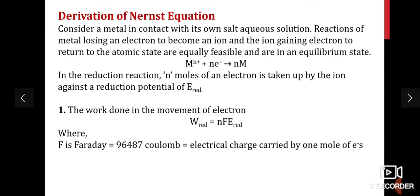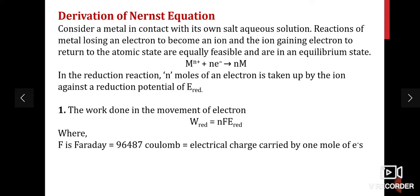For the derivation, consider any metal in contact with a solution of its own salt. The reaction of a metal losing an electron to become an ion, and the ion gaining an electron to return to the atomic state, are equally feasible and in equilibrium. The reaction is M^(n+) + ne⁻ → M. When n moles of electrons are taken up by the ion, the work done in the movement of electrons through the circuit is given by W = nFE, where F is Faraday's constant — the electrical charge carried by one mole of electrons.